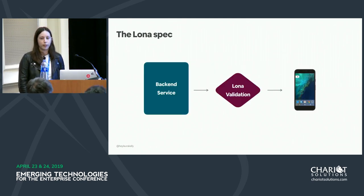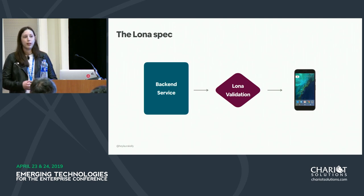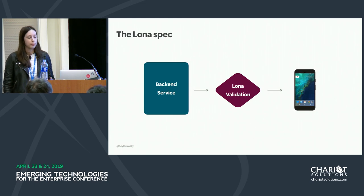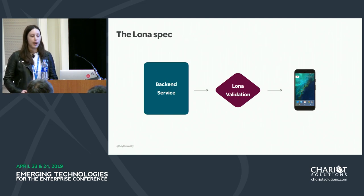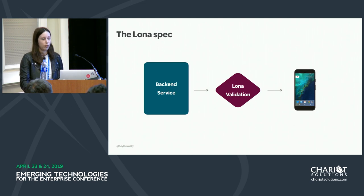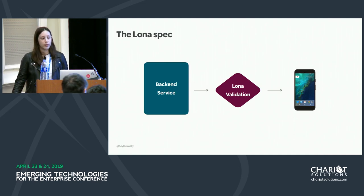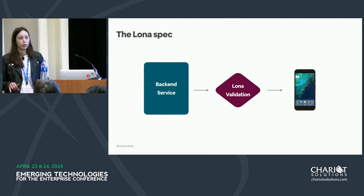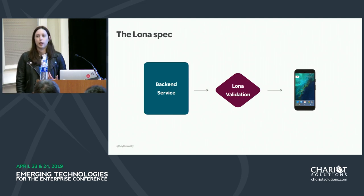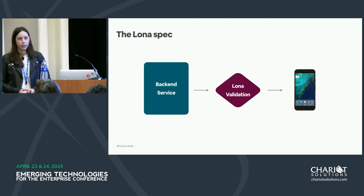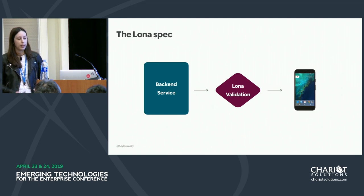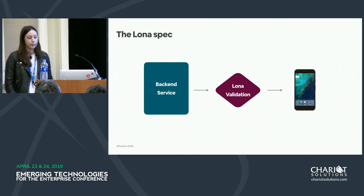At Airbnb we have a service-oriented architecture with many different backend services serviced by different product teams. Rather than building Lona validation into a particular service in a specific way, we have a Lona validator that takes in a response, makes sure it conforms to the client spec and that clients will implement it, and then sends it on if it's valid. This avoids intruding on how teams structure their services.